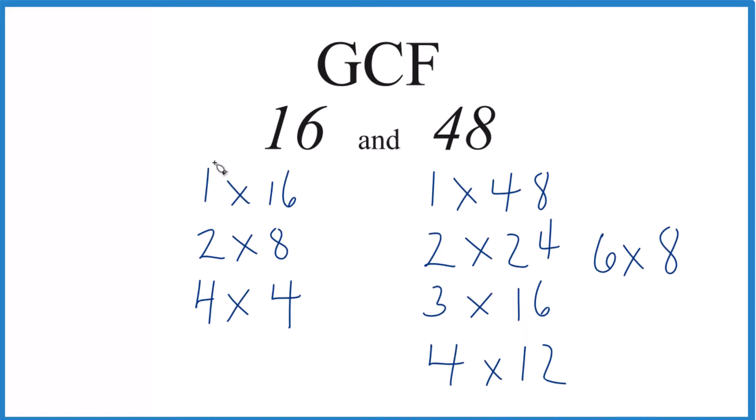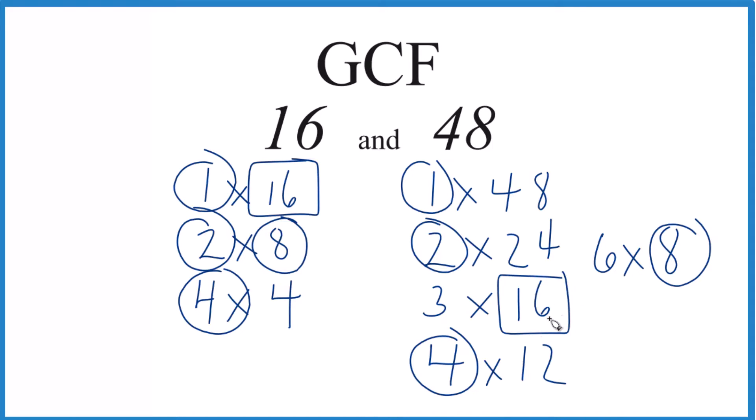See what's in common. Well, 1 goes into 16, 1 goes into 48. 2, that's in common. 4, yep, that's in common. And 8, that's in common over here. But it looks like the greatest common factor between 16 and 48 is indeed 16.